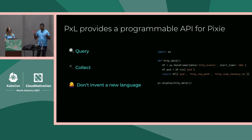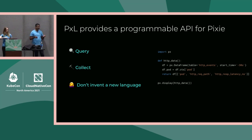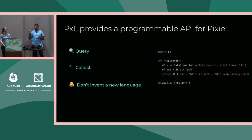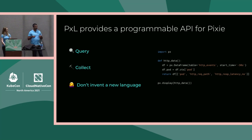You can see a snippet of PxL code on the right side. It's based on Python — it's actually 100% compatible with Python — and it's based on the pandas library, which is for data processing and very commonly used in data science. That particular code is saying: look at all the HTTP events for the last 30 seconds, capture what pod information is there, and pick out some specific columns. It gives a pretty simple way to work with data in your system.